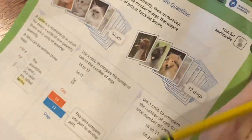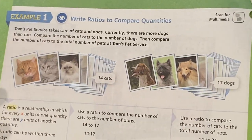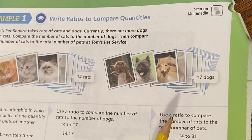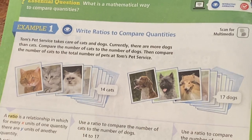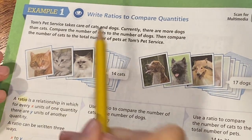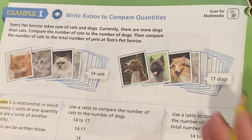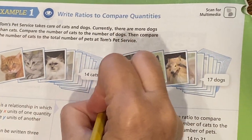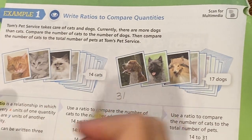Let's look at page 258 — dogs and cats! Tom's Pet Service takes care of dogs and cats. Currently there are more dogs than cats. We need to compare the number of cats to the number of dogs, and then compare the number of cats to the total number of pets. There are 14 cats and 17 dogs. 14 plus 17 is 31, so there are 31 pets total.